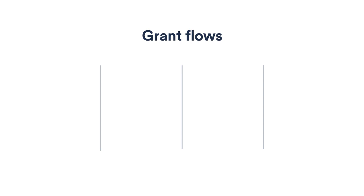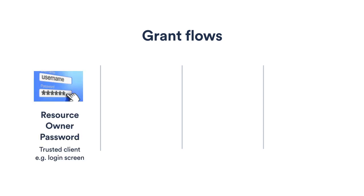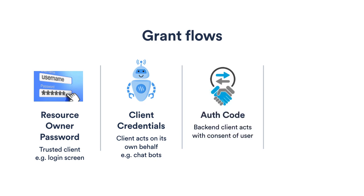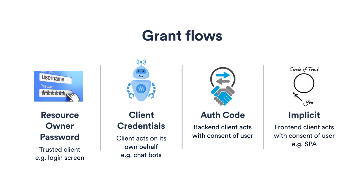There are a lot of these flows, but the four main ones you'll hear about are: firstly, resource owner password, which is kind of like basic auth for the login screen; second is client credentials, where the client acts on its own behalf — think chatbots, for example; next, the authorization code flow, which is where a back-end client can act on behalf of a user; and finally, implicit flow, used when you only have a front-end client where you can't store any secrets. We're only going to focus on client credentials and the auth code flow today, because if you understand these two, you'll understand most of what you need for auth.